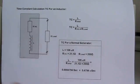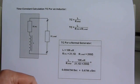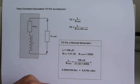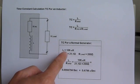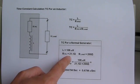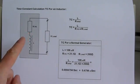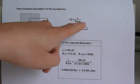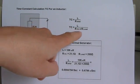Now I would like to do some calculations. For a normal generator, I have measured two values from one coil of our 500-watt 240-volt generator. This generator coil is 106 mH and has an internal resistance of 21.1 ohms. In this schematic, this is the coil, here is the internal resistance, and here is the load. When you calculate the time constant, it is L divided by R-total, which is R-internal plus R-load.